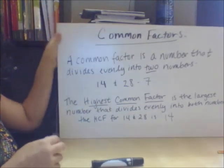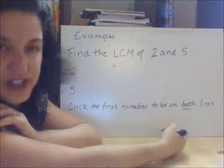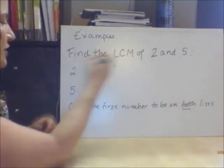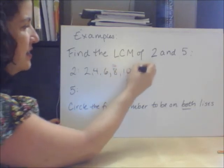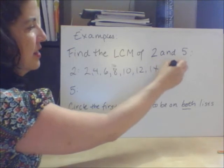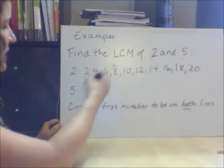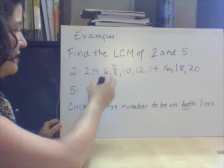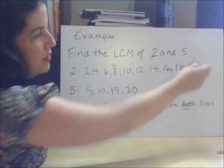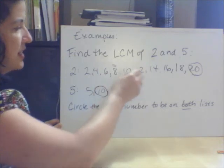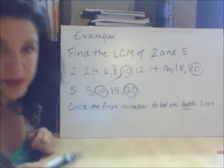So how do we actually put this into practice? Let me show you. Find the lowest common multiple of 2 and 5. What you really want to do is start listing the multiples of each number. So: 2, 4, 6, 8, 10, 12. Those are several multiples of 2. Now the multiples of 5: 5, 10, 15, 20. Let's circle the numbers that are in common — they both have 20, but they also both have 10. The first number that is on both lists is going to be your lowest common multiple.